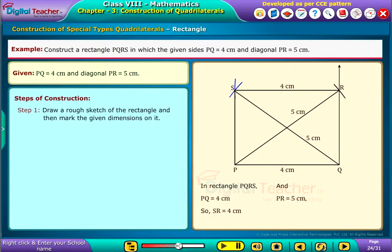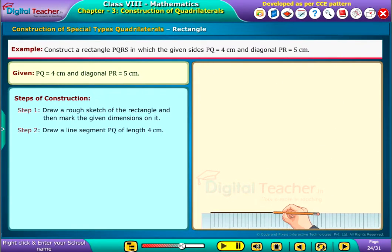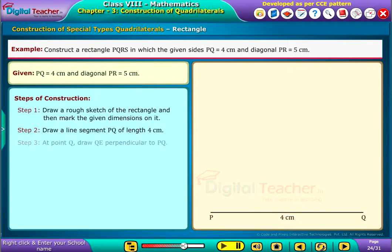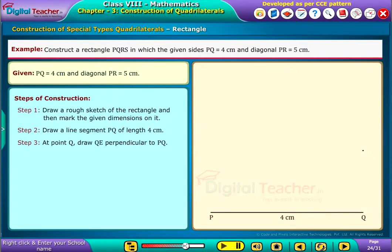Step 2: Draw a line segment PQ of length 4 centimeters. Step 3: At point Q, draw QE perpendicular to PQ.